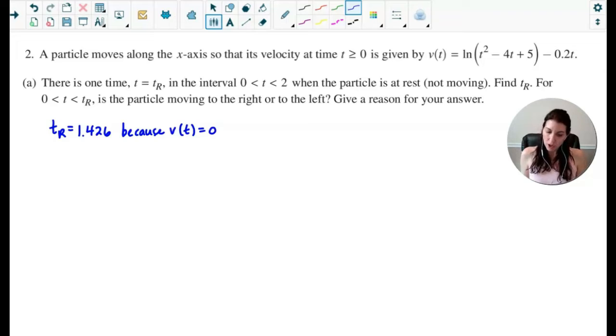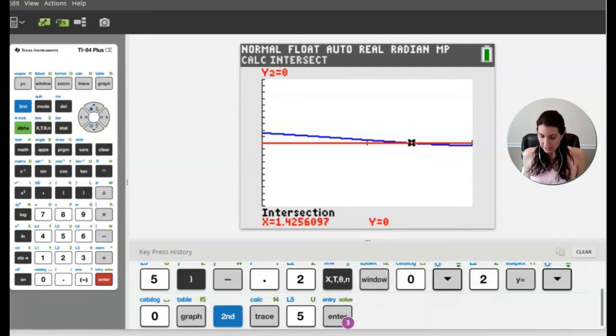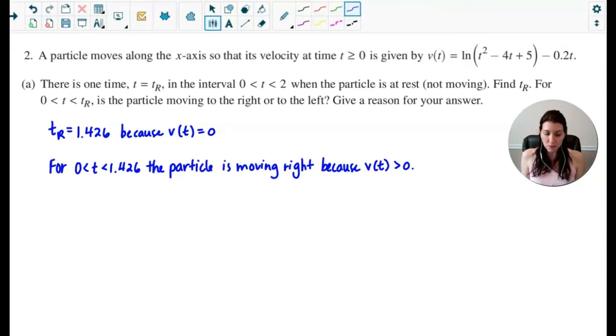And then it says for time values between zero and this value we just found of 1.426, is the particle moving right or to the left and give a reason for your answer. And if we go back to the graph, you can see that the blue graph lies above the x-axis, or velocity is positive, between zero and that time value we just found. And because velocity is positive, that means this particle is moving right. So my reasoning would be for time values between zero and 1.426, the particle is moving right because v(t) is greater than zero.